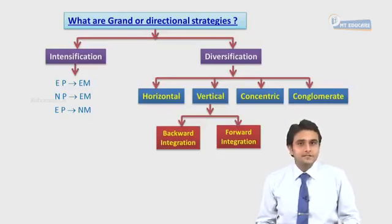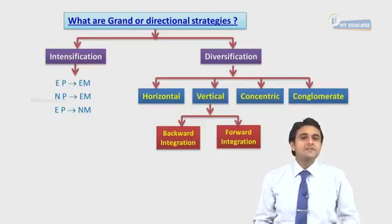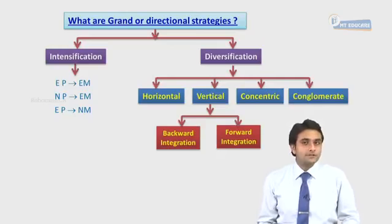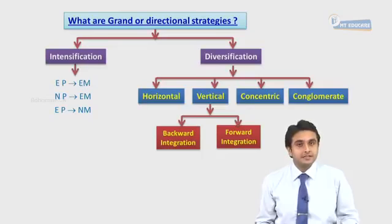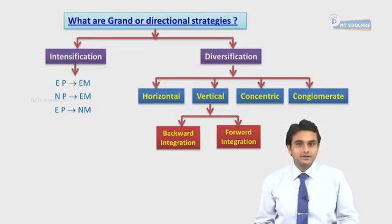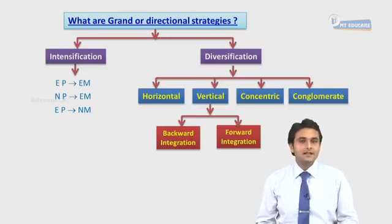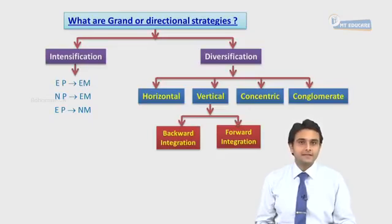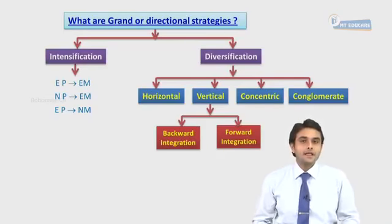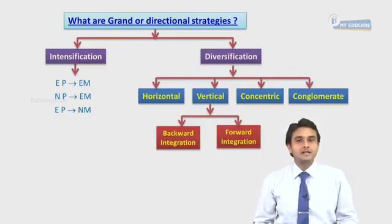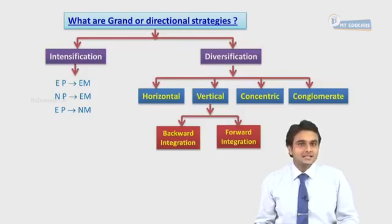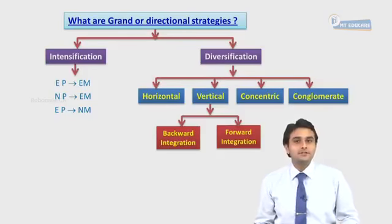Retrenchment is not always because the business is not doing well. If it feels that a product or business unit has become a dog as per the BCG matrix, a business will adopt a retrenchment strategy, and the earnings from selling that business unit will be diverted to its main existing business — which is expansion. This is a combination strategy.